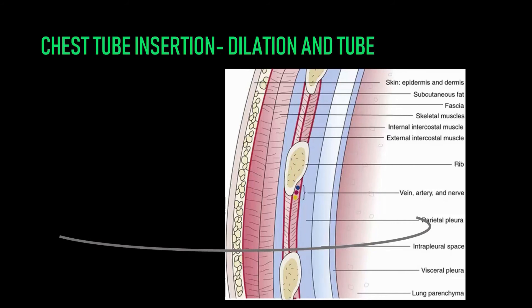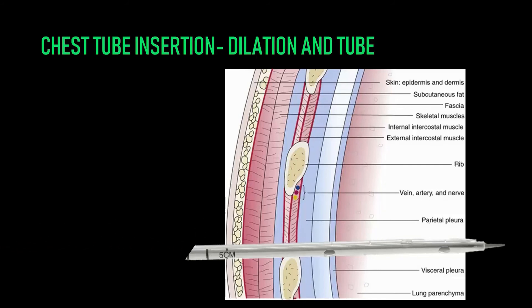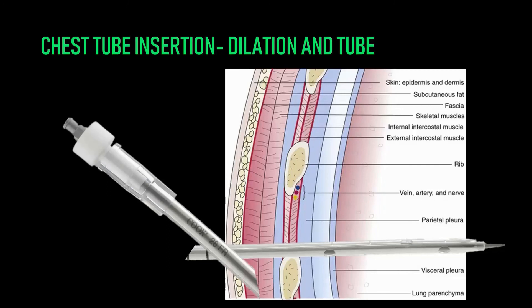Once the tract is dilated, advance the tube into the pleural space, being sure that every single hole on the tube enters the patient's body. You don't have to insert the tube all the way in, but it is crucial that all of the side holes be completely within the pleural space. Advance the tube gently and carefully, and stop if you feel any resistance. You can then withdraw the wire. Note that the Thalquik tube has a plastic inner lumen designed to help the tube slide more easily over the wire and stiffen it as it enters the body. Once you've advanced the tube to a satisfactory depth, take out the plastic inner lumen and the wire all at once, leaving the clear plastic chest tube inside the patient.